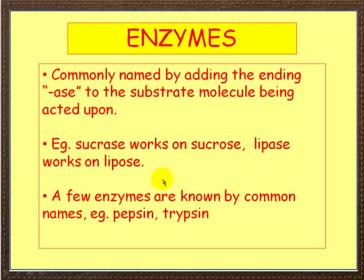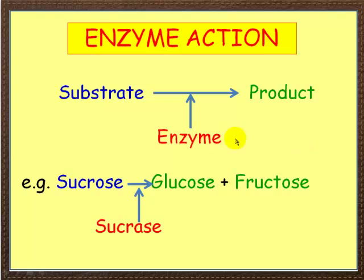As in most biological things there are always exceptions, and a few enzymes are known by common names, for example pepsin and trypsin. Looking at enzyme action: the substrate is what's being acted upon — sucrose in this case. The enzyme acts upon the substrate; here it's sucrase. The product is what is formed, and here we get glucose and fructose.